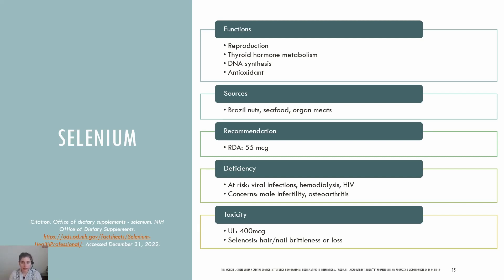Selenium is a trace mineral that is essential for reproduction, thyroid hormone metabolism, DNA synthesis, and protection from oxidative stress. The highest sources of selenium are Brazil nuts, seafood, and organ meats. The RDA for selenium is 55 mg. Deficiency of selenium is rare but can be due to viral infections, those undergoing hemodialysis, or those living with HIV. Selenium deficiency can be connected to male infertility, osteoarthritis, and also make an iodine deficiency worse. There is a UL set for selenium at 400 mg to prevent selenosis, in which hair and nail loss or brittleness can occur.